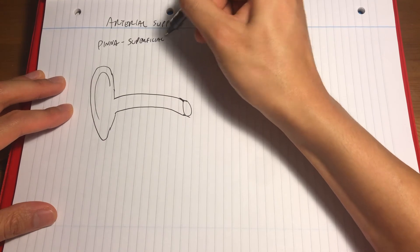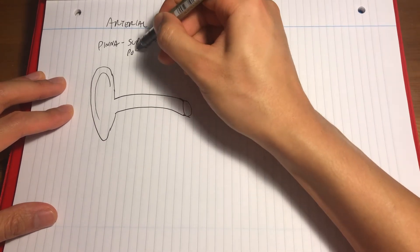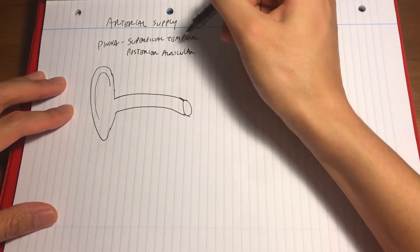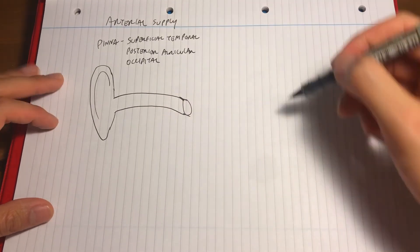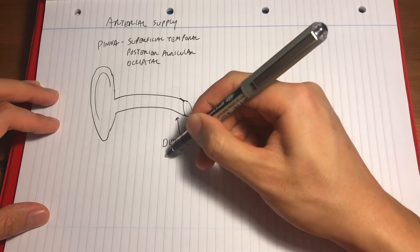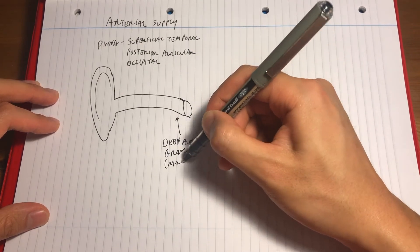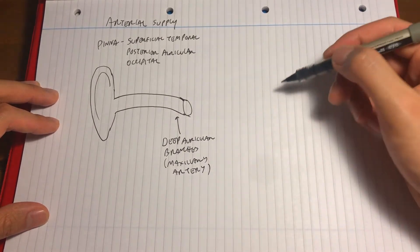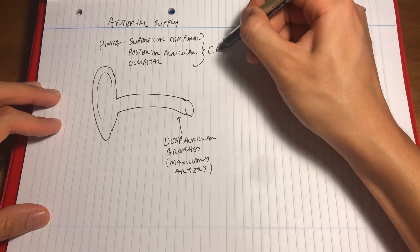So the answer is the superficial temporal, the posterior auricular, and the occipital artery, all branches of the external carotid artery. In addition to this, there are deep auricular branches of the maxillary artery that supplies the medial end of the canal.